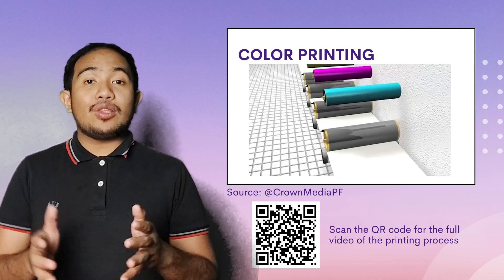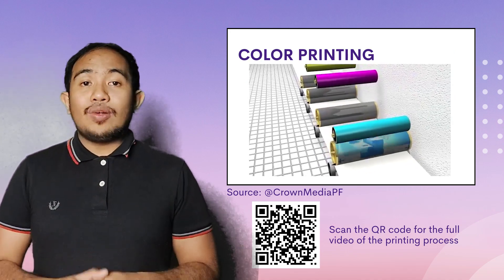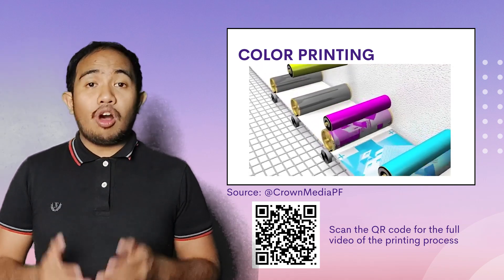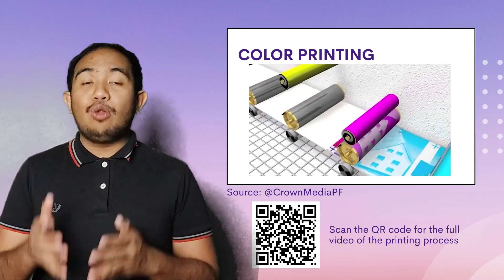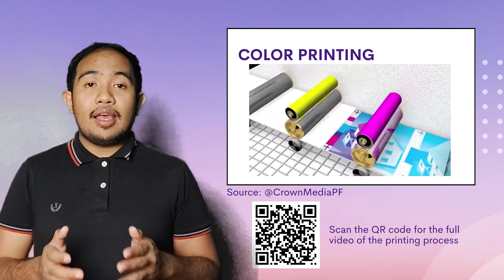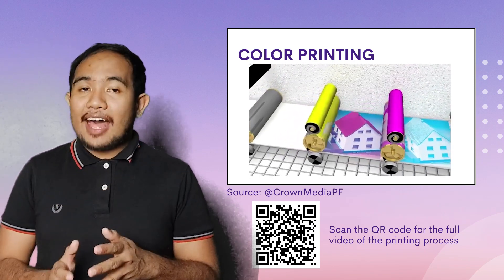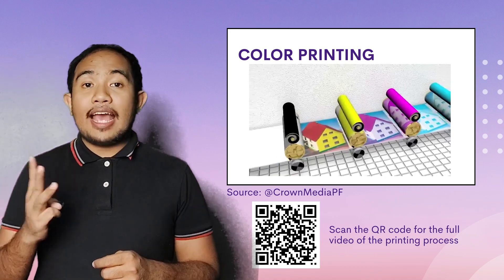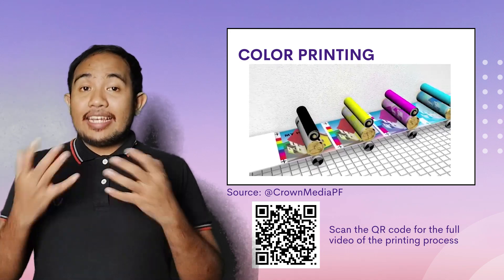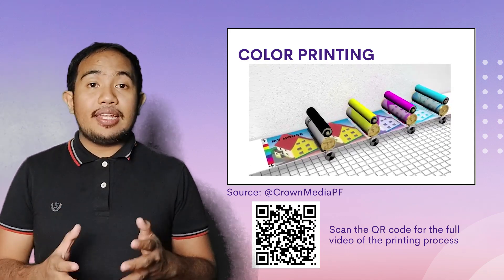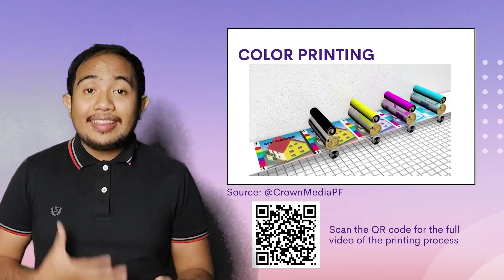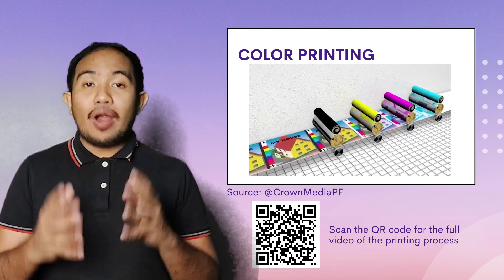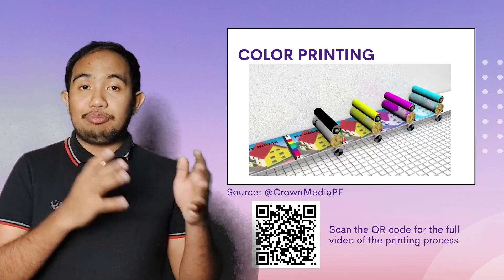We also like to add color printing, which is commonly found in computer or digital printing. Color printing differs from black and white printing because the colors are broken down into four basic colors: red, blue, yellow, and black. Each color is applied separately to create a full spectrum of colors, making color printing more expensive than black and white printing.